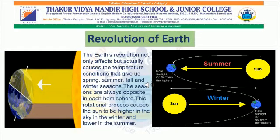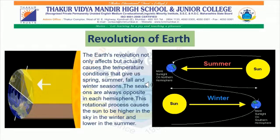Revolution of the Earth and the Seasons: The Earth's revolution not only affects but actually causes the temperature conditions that give us spring, summer, fall, and winter seasons. The seasons on the Earth are always opposite in each hemisphere. The rotational process causes the Sun to be higher in the sky in winter and lower in summer. For example, if you see the first image, sun rays fall directly on the Northern Hemisphere, so the Northern Hemisphere faces summer season at that point of time, whereas there will be winter in the Southern Hemisphere, and vice versa.